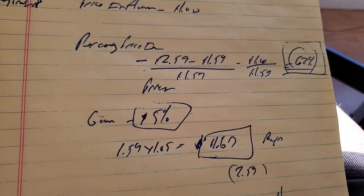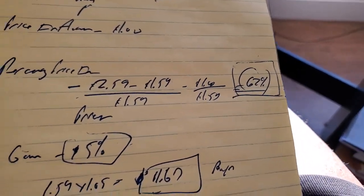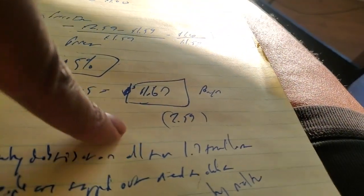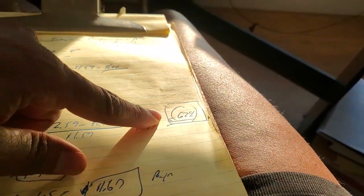Government says the inflation rate is 5 percent. So you're actually, instead of it being $1.67, like they said, it was almost 62 percent more.